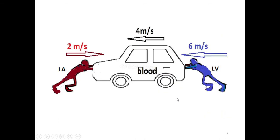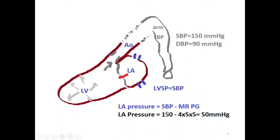To put it simply, imagine forces acting on each side — the left ventricle on one side and the left atrium on the other. These forces act against each other. If we know two of the three elements — left ventricular pressure, the velocity of the MR blood flow, and left atrial pressure — we can easily calculate the third. In this case, knowing LVSP and MR velocity, we calculated left atrial pressure as 50 mmHg.